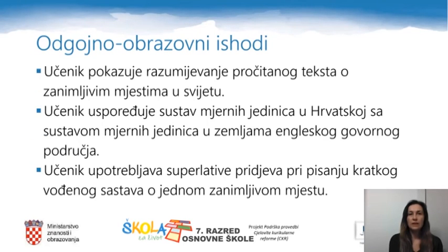By the end of this lesson you will show understanding of a text about interesting places in the world. You will be able to compare the system of measurement used in Croatia with the one used in English-speaking countries. And you will be able to use the superlative forms of adjectives when writing a short text about an interesting place according to specific guidelines.